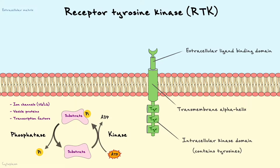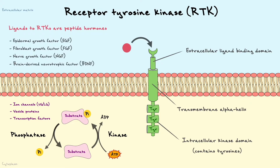The receptor has a ligand binding site. In contrast to GPCRs that are commonly activated by typical neurotransmitters like dopamine, glutamate, and acetylcholine, RTKs are commonly activated by peptide hormones such as epidermal growth factor, fibroblast growth factor, nerve growth factor, and brain-derived neurotrophic factor.